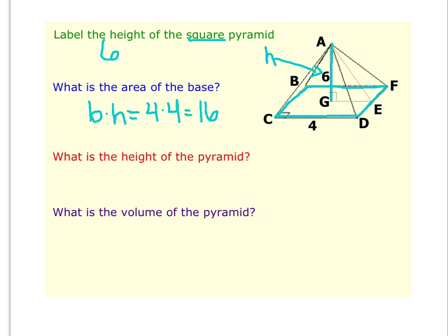The height of the pyramid, remember we already discovered that, is 6. And so to find the volume of this pyramid, we are going to take one-third times the area of the base times the height of the pyramid. So that's going to be one-third times 16 times 6.